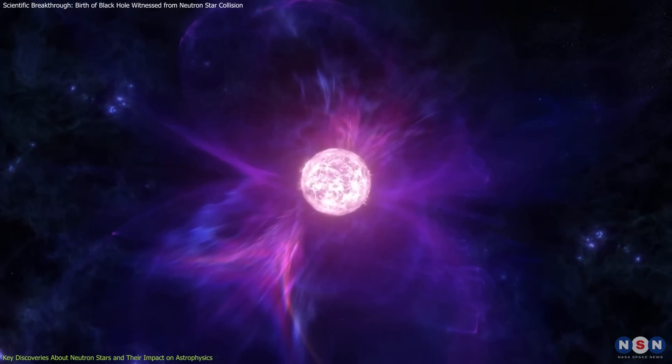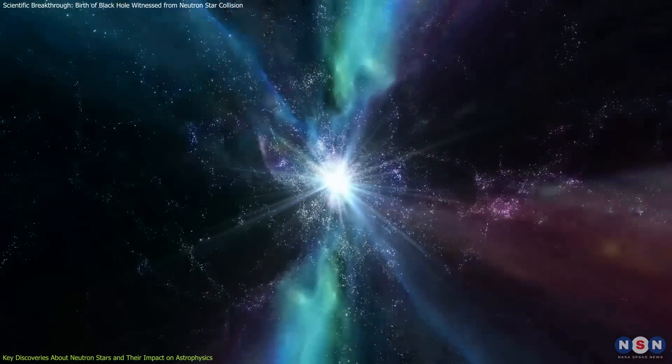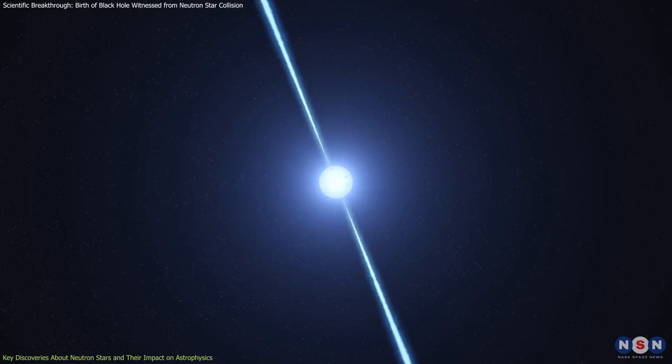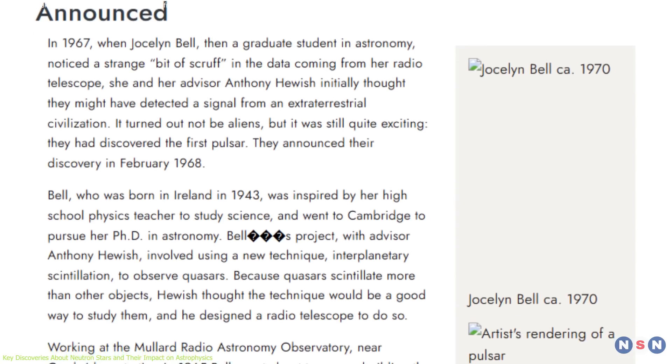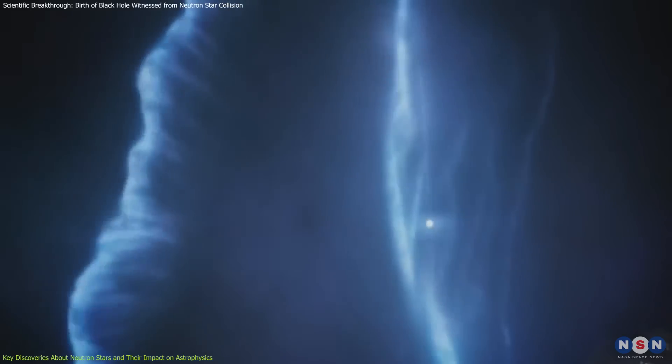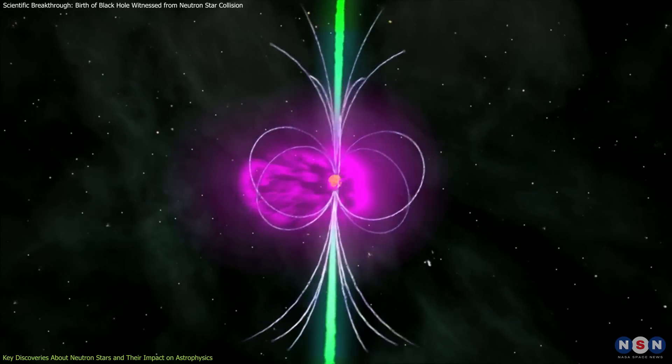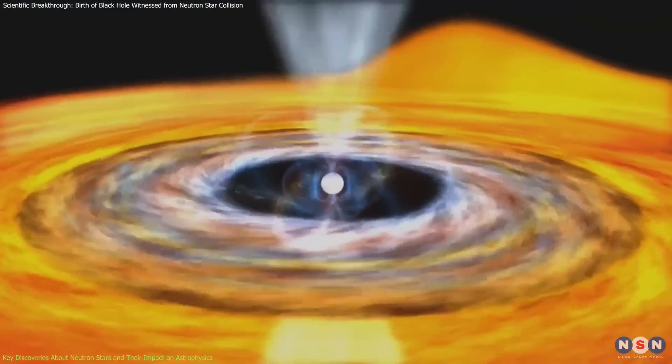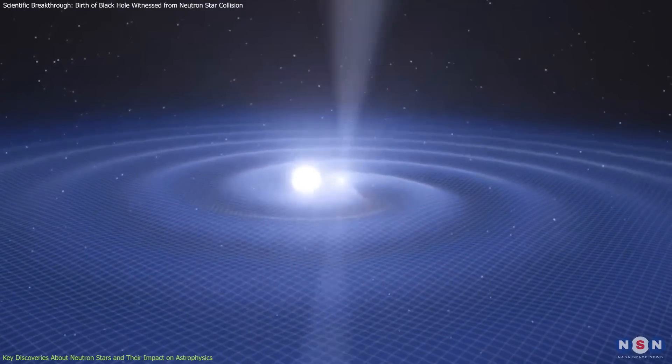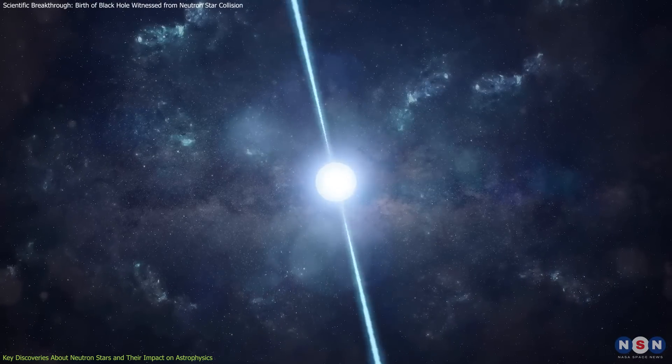Neutron stars have long intrigued scientists with their extreme properties, leading to several landmark discoveries that have shaped our understanding of the cosmos. One of the earliest groundbreaking discoveries was the identification of pulsars. In 1967, astronomers Jocelyn Bell Burnell and Anthony Hewish detected rapidly spinning neutron stars that emitted beams of radio waves in a consistent pulse, which they termed pulsars. This discovery confirmed the dense nature of neutron stars and demonstrated their intense magnetic fields, which emit detectable radiation. Pulsars became invaluable tools for studying neutron stars indirectly, as their regular pulses allowed scientists to measure properties like rotation and magnetic field strength, setting the stage for future insights into these enigmatic objects.